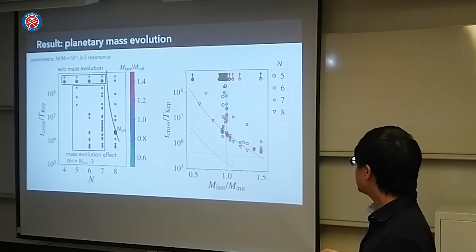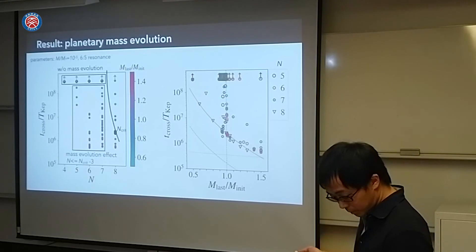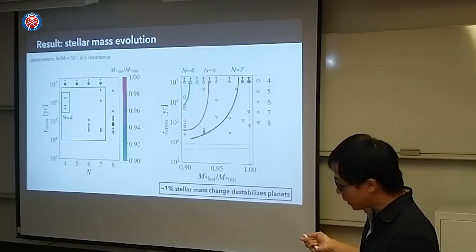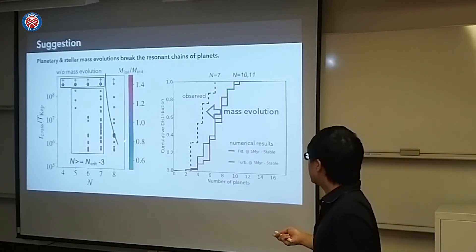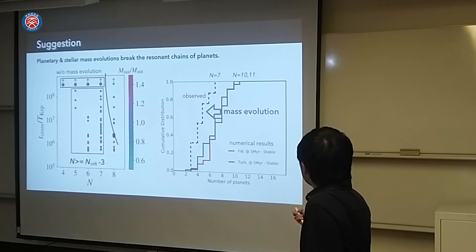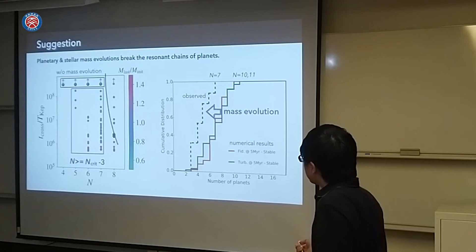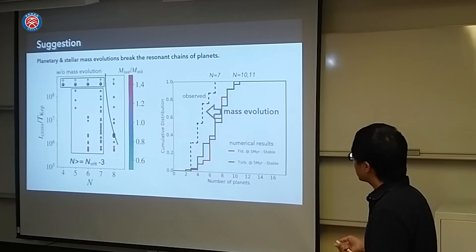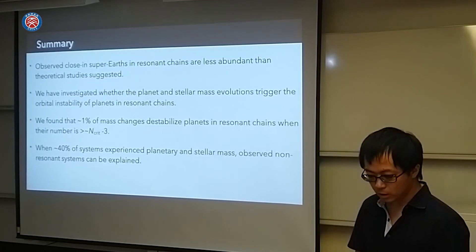In short, we confirm that the global instability in these cases where number of planets are less than the critical value. This 1% mass changes will help to explain these differences. Number of planets are about 10 for the numerical result and number of planets are 7 for observed results. This kind of mass evolution of stars or planets will help to explain these observed distributions. This is my summary. Thank you for your attention.